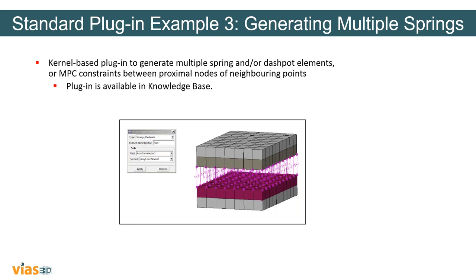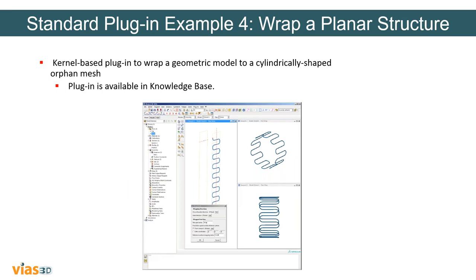Another good example is where you want to define connections between various surfaces — like springs, dashboards, or MPC constraints. You can specify those surfaces and the plugin will automatically create the springs and dashboards for you. This plugin is also available in the knowledge base. Another very good example is the creation of a straight face where you want to wrap around your model in a cylindrical shape structure. You can use that plugin instead of doing this geometry manually in Abacus CAE — just specify and vary some parameters and the plugin automatically generates this complex shape for your analysis.